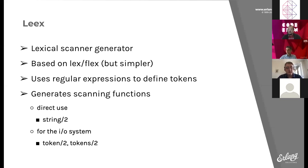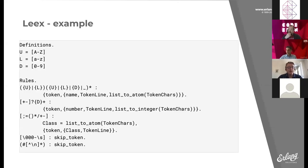Here's a simple example of using Leex — a simple tokenizer. We can define some macro-type things: U for uppercase letters, L for lowercase letters, and D for digits. Then we have a set of rules. The first rule says a token either starts with an upper or lowercase letter followed by zero or more uppercase, lowercase letters, digits, or underscores. When that matches, we return a token.